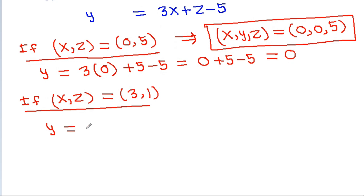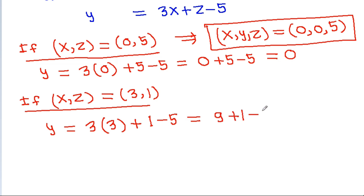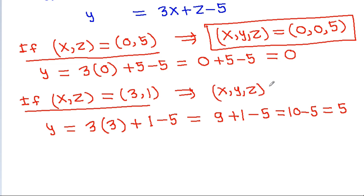And if (x, z) is equal to (3, 1), then y will be equal to 3 times 3 plus 1 minus 5, that is 9 plus 1 minus 5, which equals 5. So (x, y, z) is equal to (3, 5, 1).